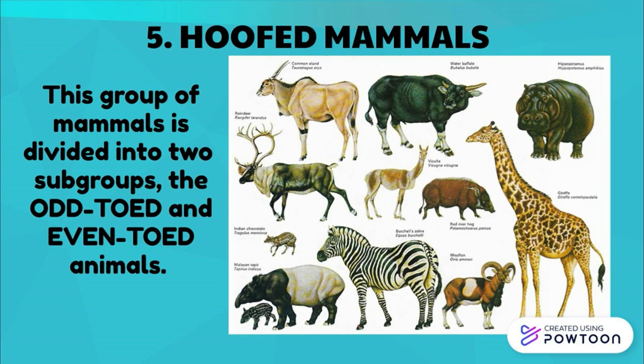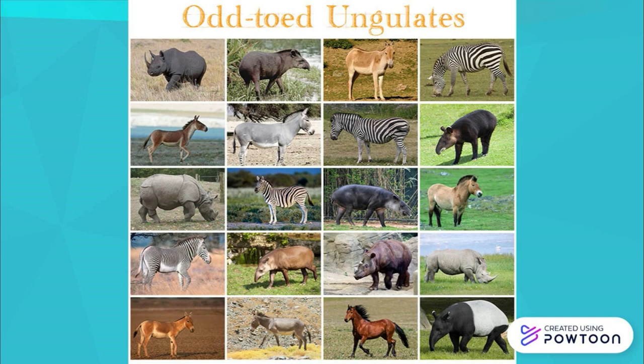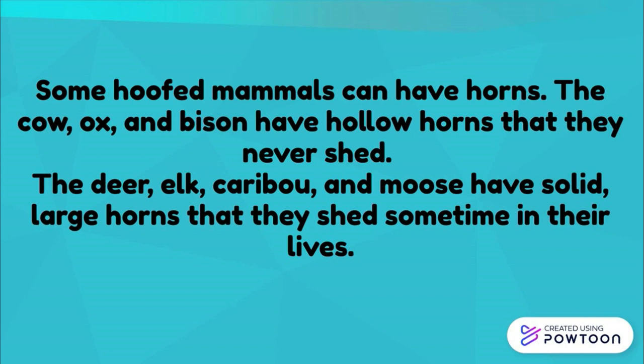Hoofed mammals are divided into two subgroups: odd-toed and even-toed animals. Examples of even-toed, cud-chewing mammals are the cow, sheep, goat, camel, giraffe, and deer. Some hoofed mammals have horns — the cow, ox, and bison have hollow horns that they never shed, while the deer, elk, caribou, and moose have solid, large antlers that they shed at some point in their lives.